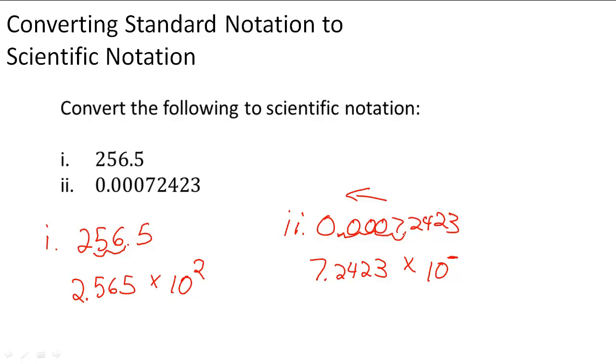And how many spaces do we have to move it? 1, 2, 3, 4 spaces. So negative 4 is going to be the exponent. And when you multiply this, you can check your work and see that you get 0.00072423.